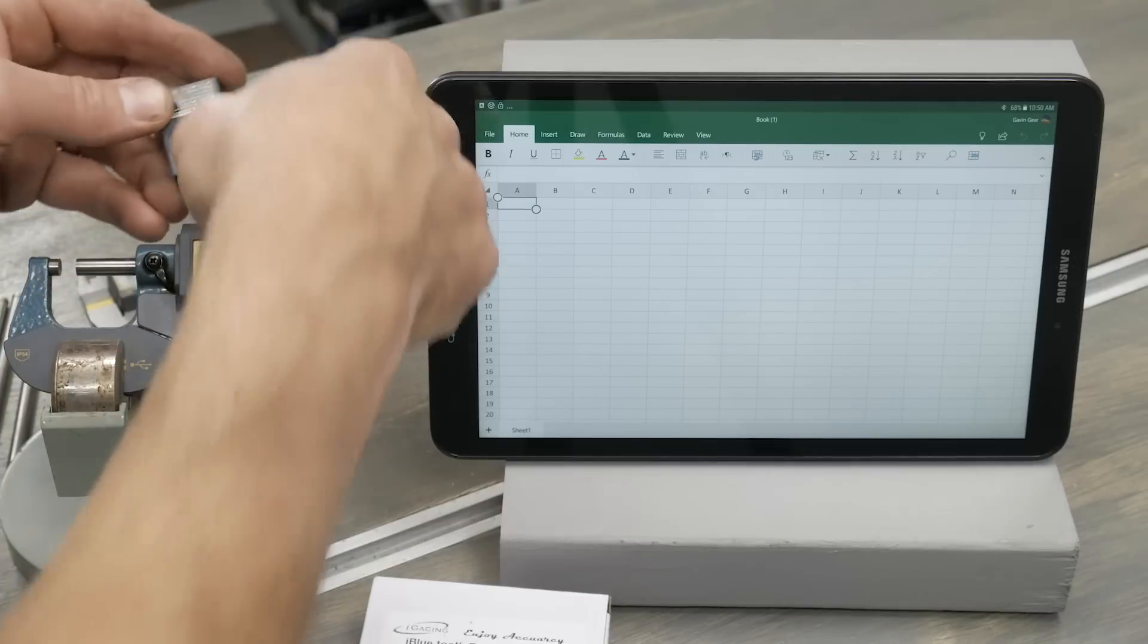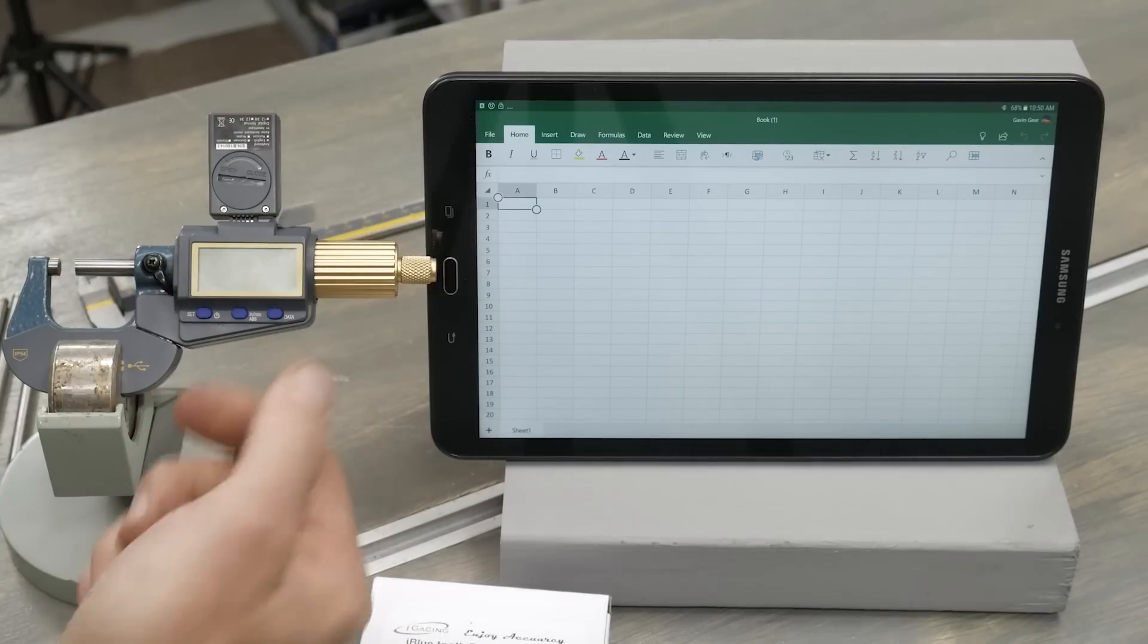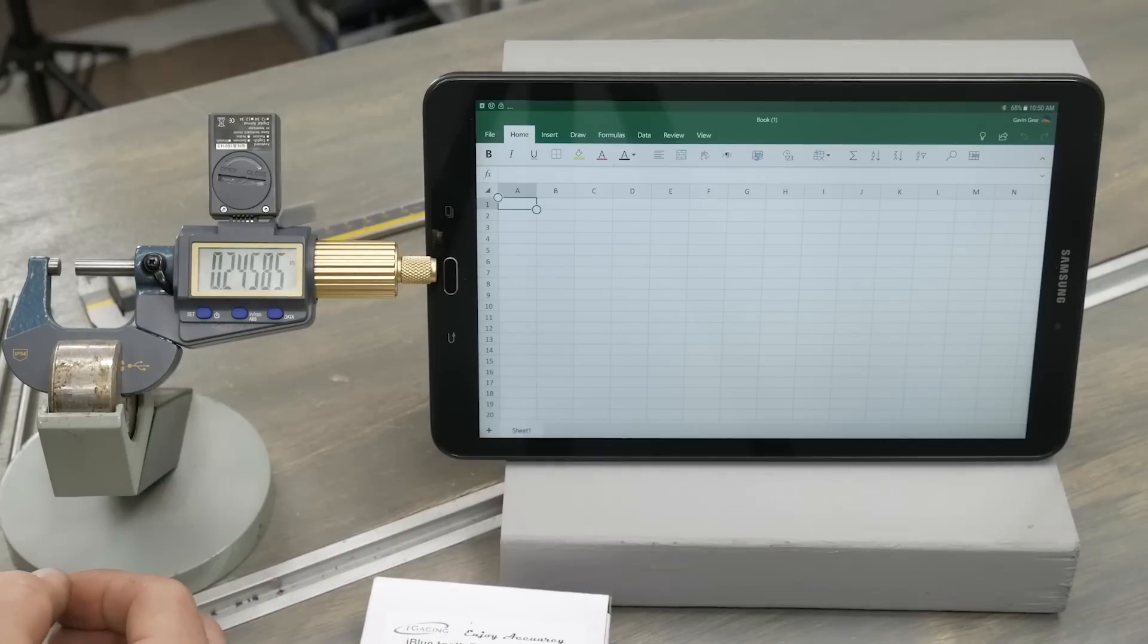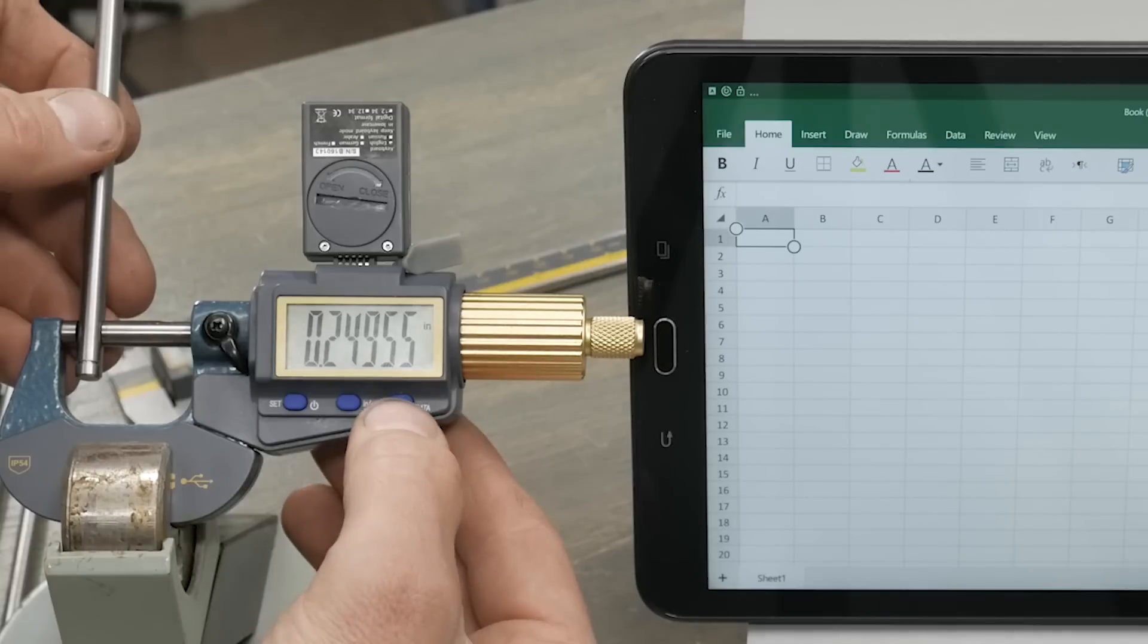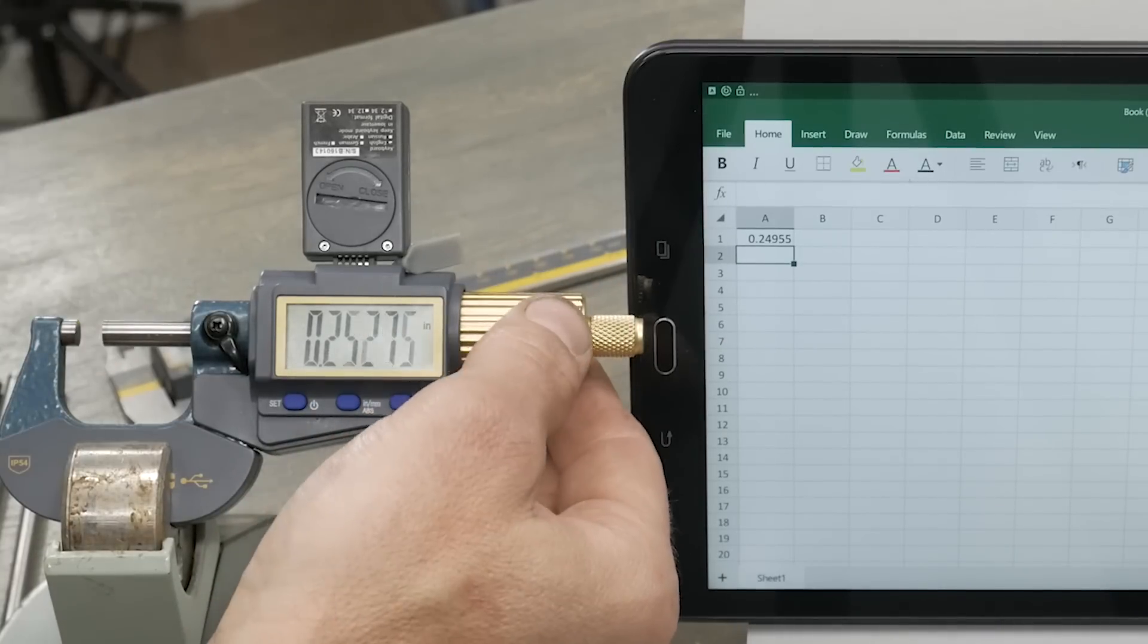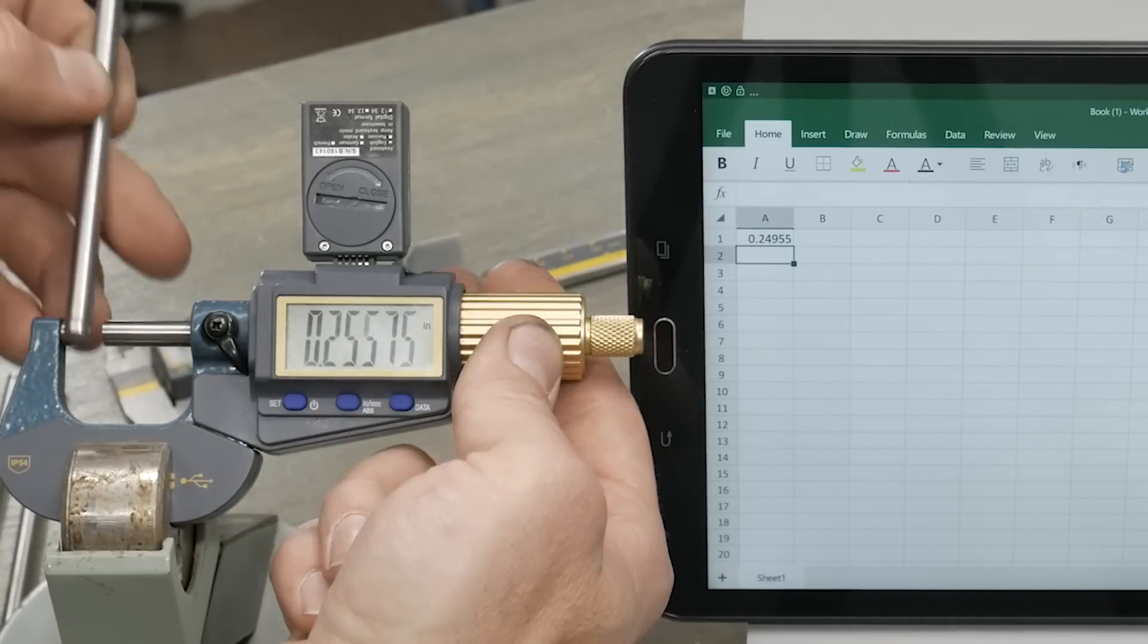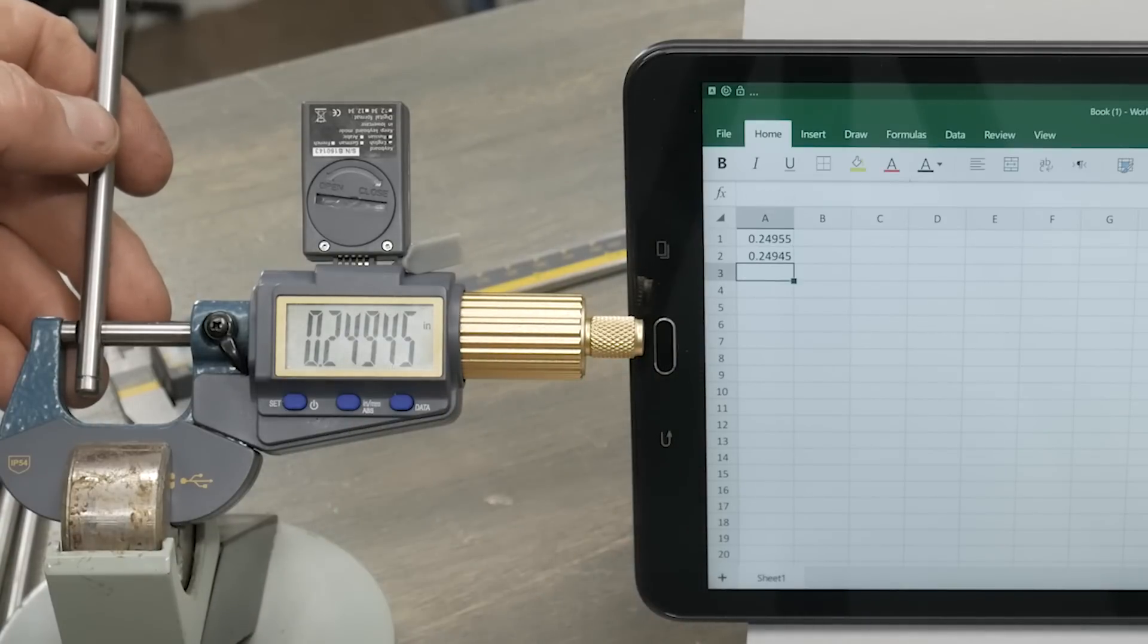So, I just plug this guy in. You've got to look at the conductors and make sure they're pointed the correct direction. We're going to turn on the device here, and then we're going to take one of our measurements, hit the data button, and then it's going to input that measurement into the spreadsheet. Hit data again. There it goes.